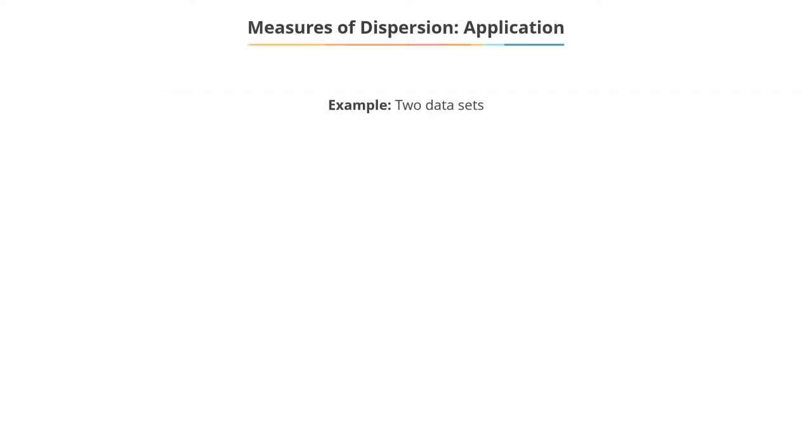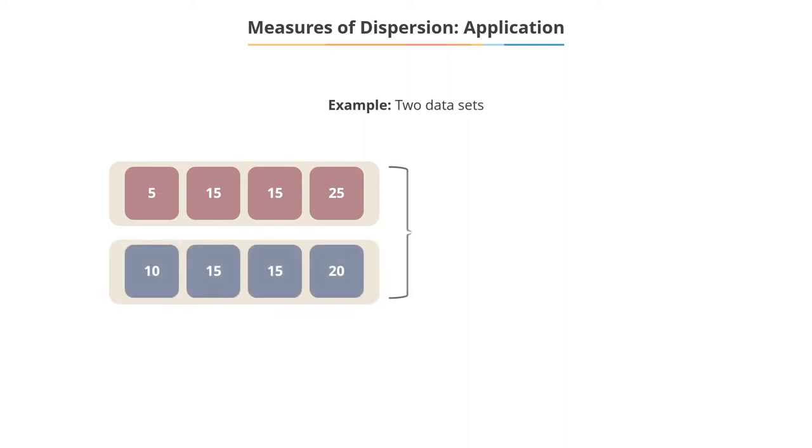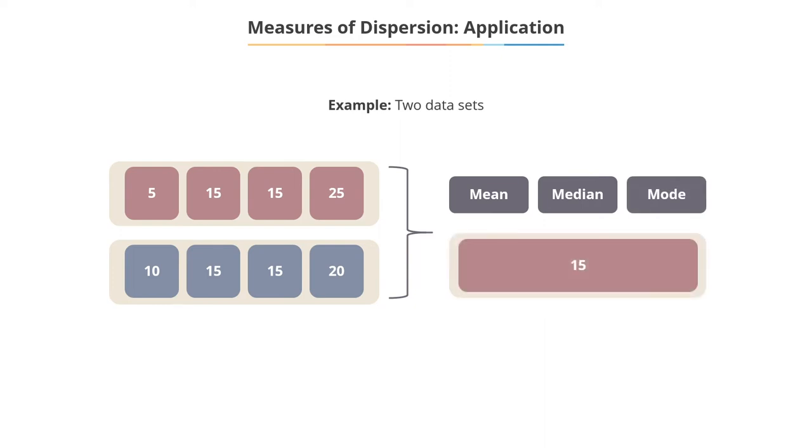Look at the two data sets. 5, 15, 15, 25 and 10, 15, 15, 20. The mean, median, and mode of the two data sets are 15, all identical.